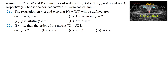Assume X, Y, Z, W, and P are matrices of order 2 by N, 3 by K, 2 by P, N by 3, and P by K respectively. Matrix X has order 2 by N, matrix Y has order 3 by K, matrix Z has order 2 by P, matrix W has order N by 3, and matrix P has order P by K.